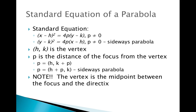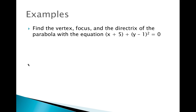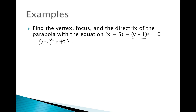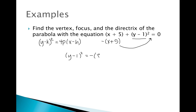Now let's put this into action with an example. We need to find the vertex, focus, and directrix of the parabola with the equation (x + 5) + (y minus 1) squared equals 0. The first thing we need to do is rearrange it into standard form. This is a sideways parabola because the y component is squared. Moving (x + 5) to the other side gives us (y minus 1) squared equals negative (x + 5).